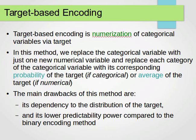The other one is called target-based encoding. We do numerization of categorical variables via a target. In this method, we replace the categorical variable with just one numerical variable and replace each category with its corresponding probability, if it's categorical, or average, if it's numerical. The example is from Professor Saeed Saeed's website. The main drawbacks are it depends on the distribution of the target, and it has lower predictability compared to binary encoding. Binary encoding usually improves predictability.